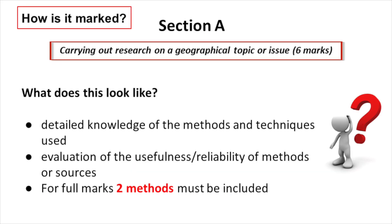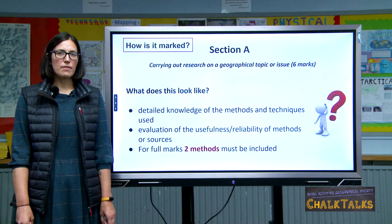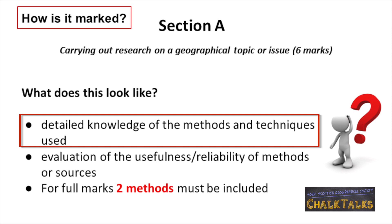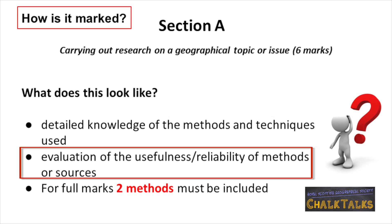Section A is worth six marks and is based on carrying out research of your chosen topic. This is effectively your methodology and you should describe in detail two methods. This would include how you went about the collection of data, evaluating its effectiveness and limitations, and how you overcame any problems.